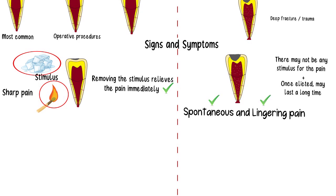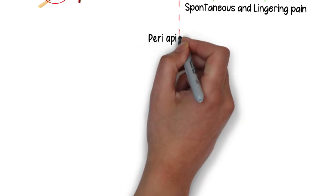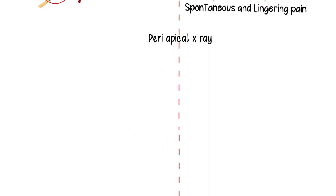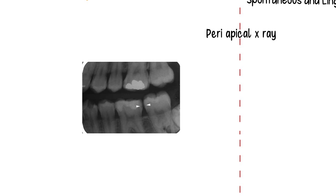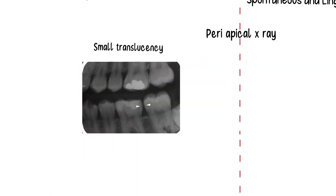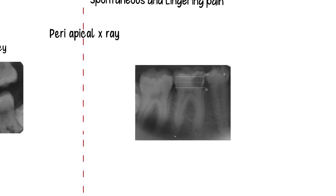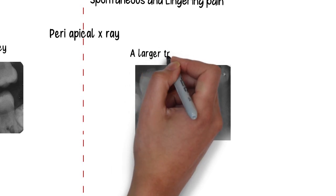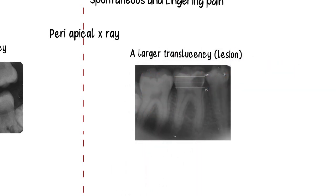That is not to say that the concerning tooth will always give signs and symptoms, as sometimes it may not. Signs and symptoms along with periapical X-ray and clinical examination are important in confirming any diagnosis. On a periapical X-ray, a small translucency may be appreciated at the carious lesion for reversible pulpitis, while irreversible pulpitis will show a bigger translucency much closer to the pulp.